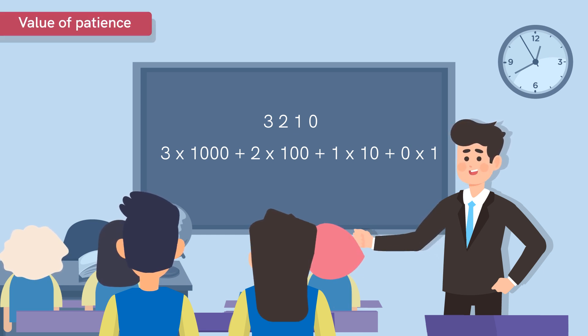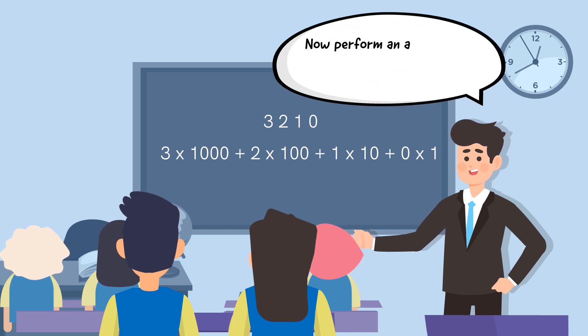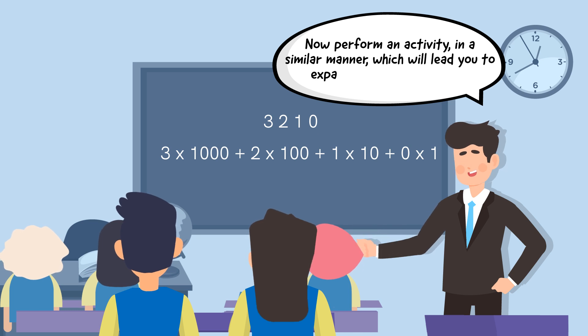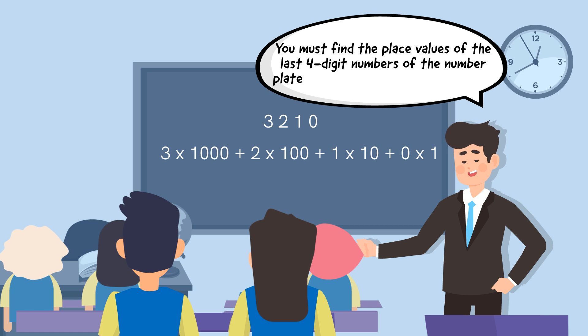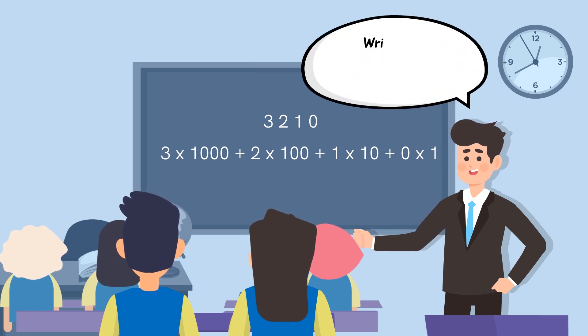Now ask the students to perform an activity in a similar manner to lead to expanded form of numbers: 'You must find the place values of the last four-digit numbers of the number plate of a car that you can remember. Write them down in your notebook just the way I wrote on the blackboard.' Examples of responses can be 4726, 8129.